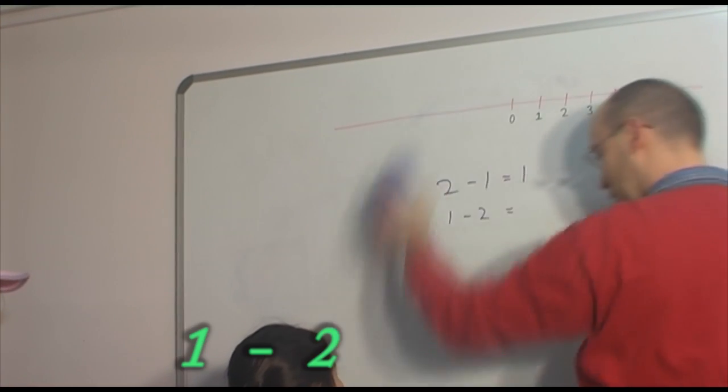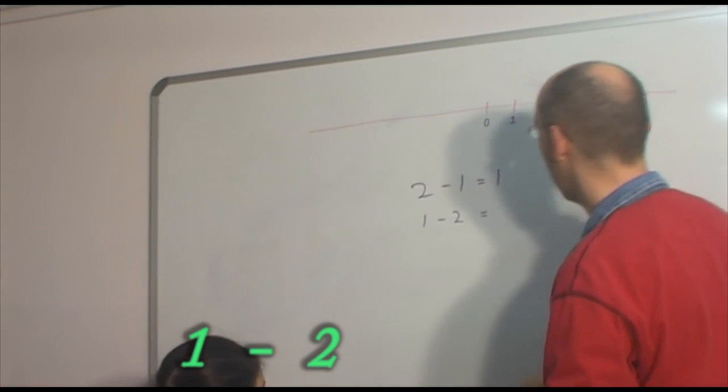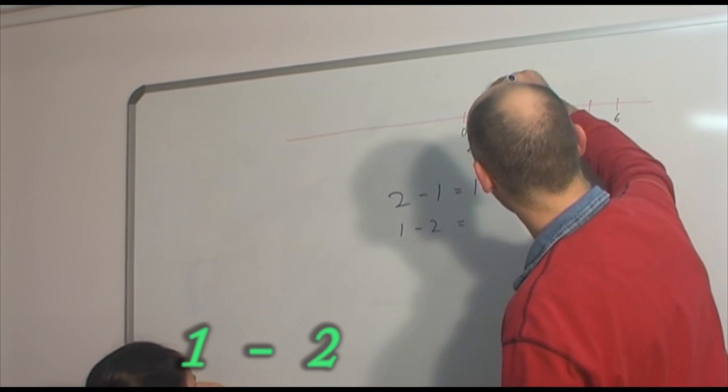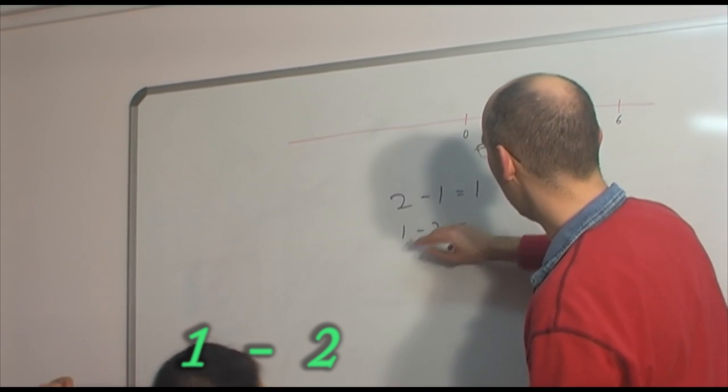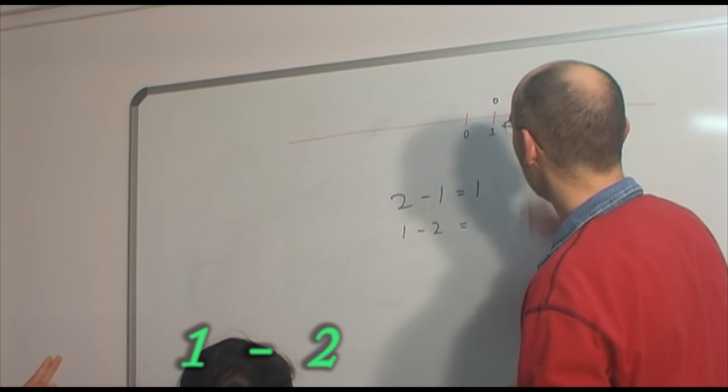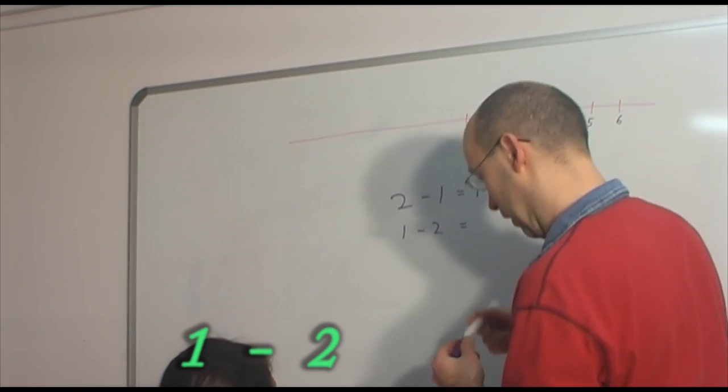And what do we do on the second one? We start at where? We start on 1. And then where do we go? How many do we go back? Two. Two back, right?